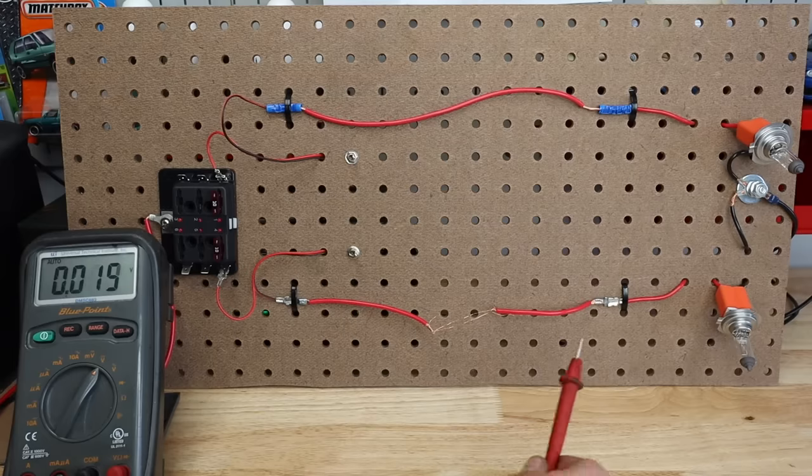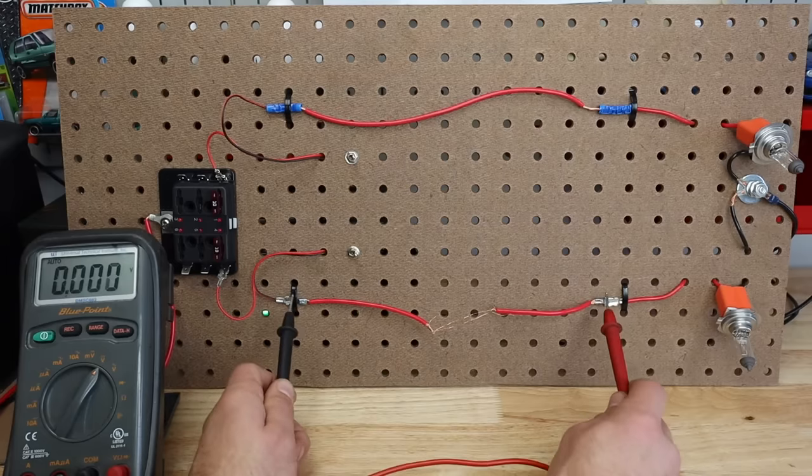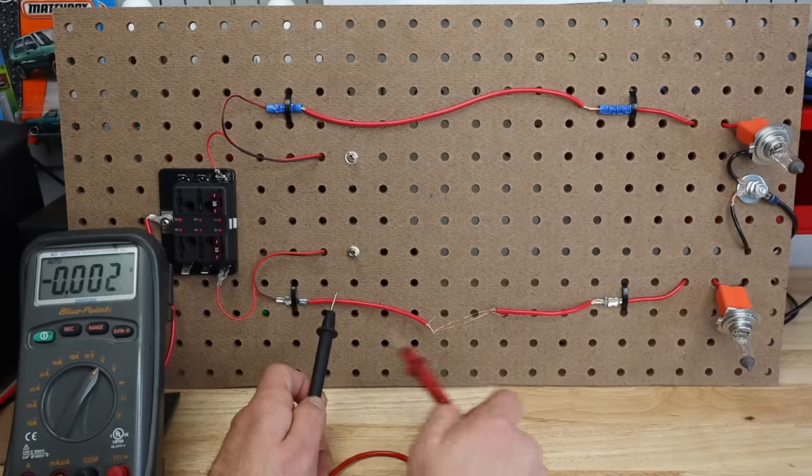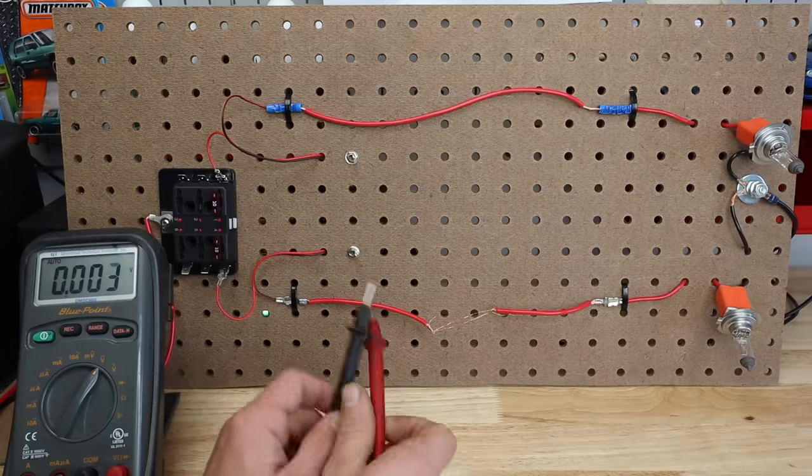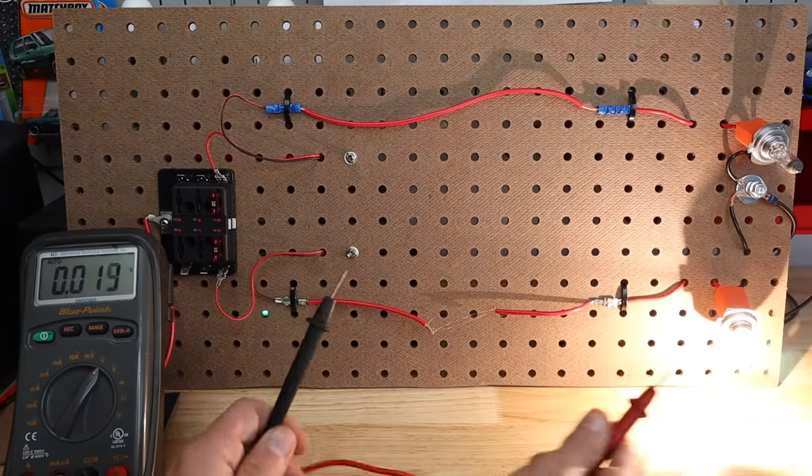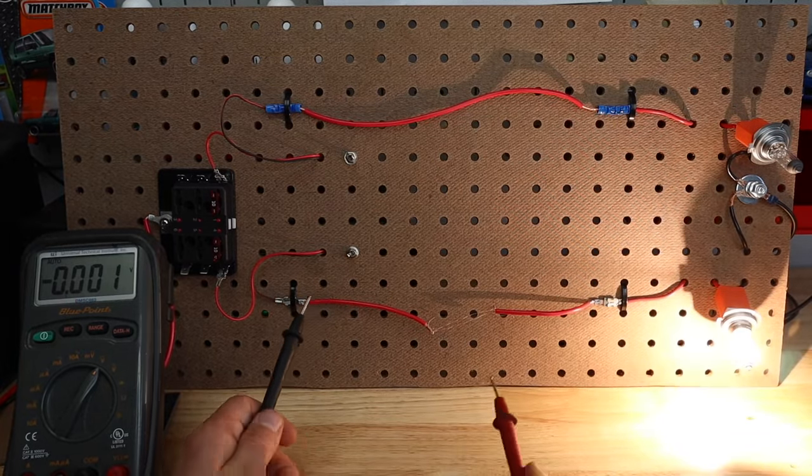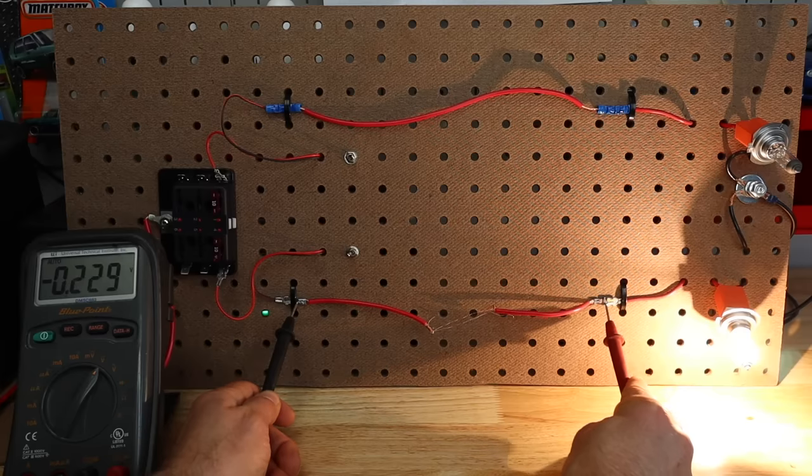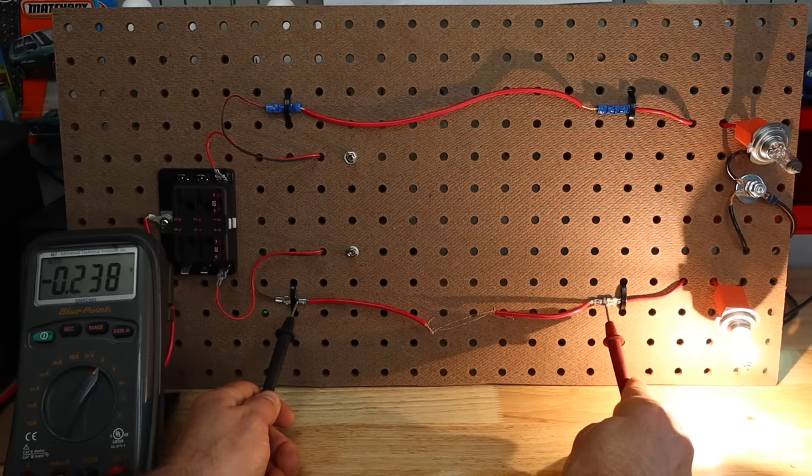So here you can see we can do a resistance check and it's good - resistance is good, 0.2 ohms because we have two strands connected. And then once we start to load the circuit, which is what we're doing when we're putting the bulb in, when we load the circuit and check it, we see a pretty high loss of voltage.